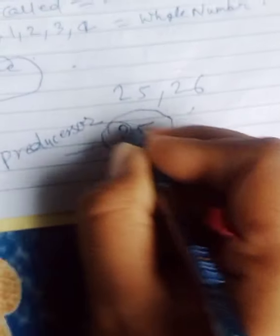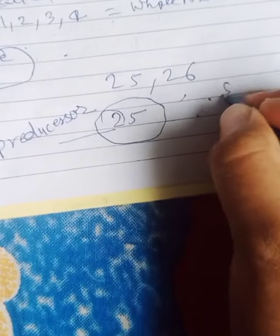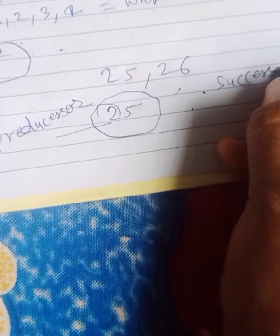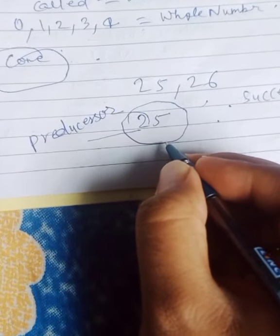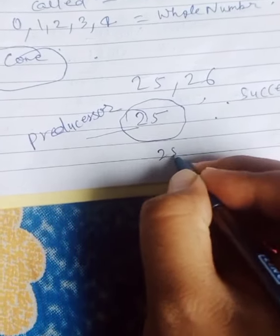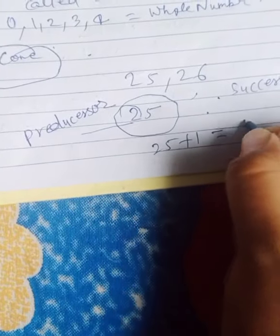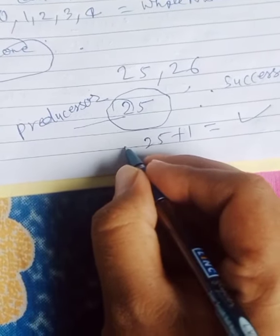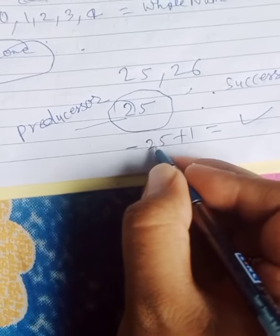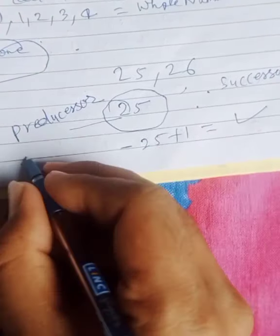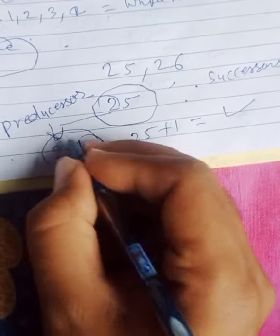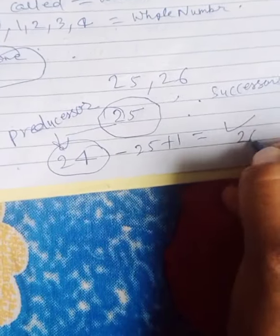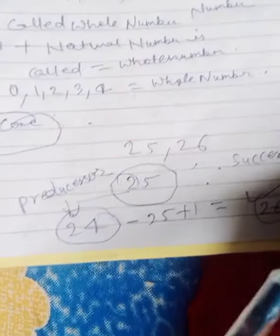The number that comes before the given number is the predecessor, and the number that comes after the given number is the successor. For example: if you add one to the given number, that is the successor. If you subtract one from the given number, that is the predecessor. So 24 is the predecessor of 25 and 26 is the successor of 25.